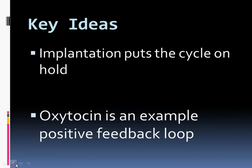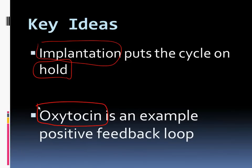So the two key ideas in this screencast are going to be that implantation is going to halt the cycle, prevent it from going further, from ending and the uterine lining being shed. It's going to provide how childbirth is controlled, giving us an example of a hormone that is a positive feedback loop, and the name of this hormone is oxytocin.